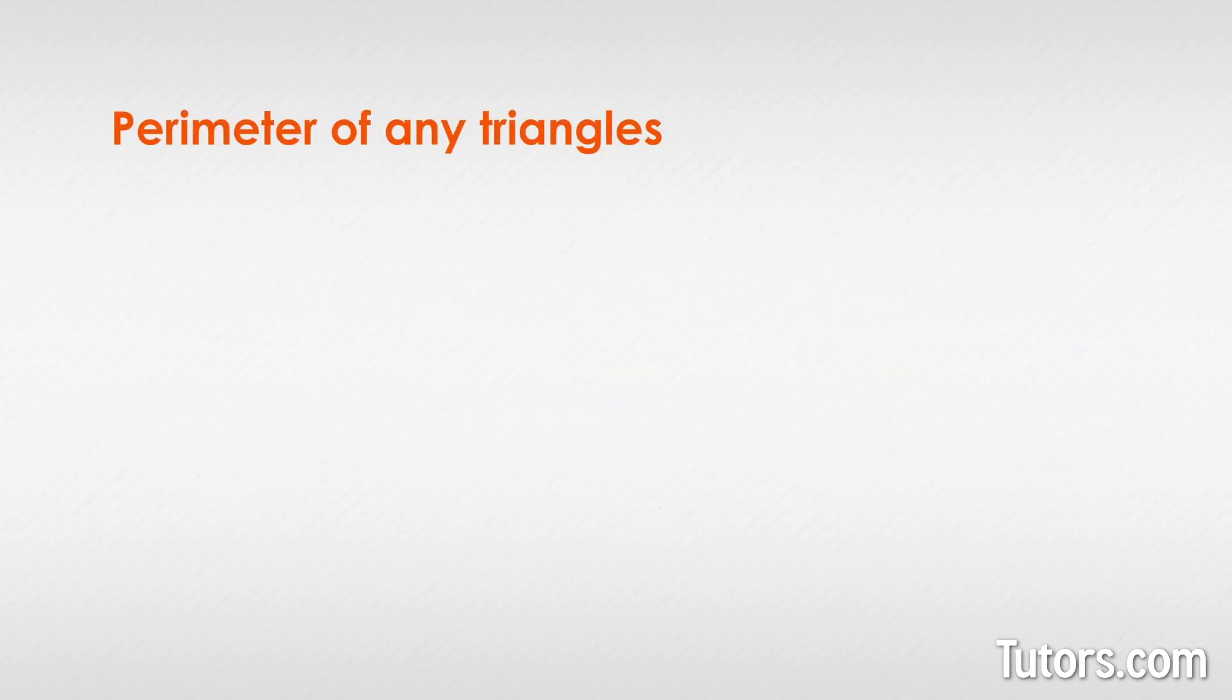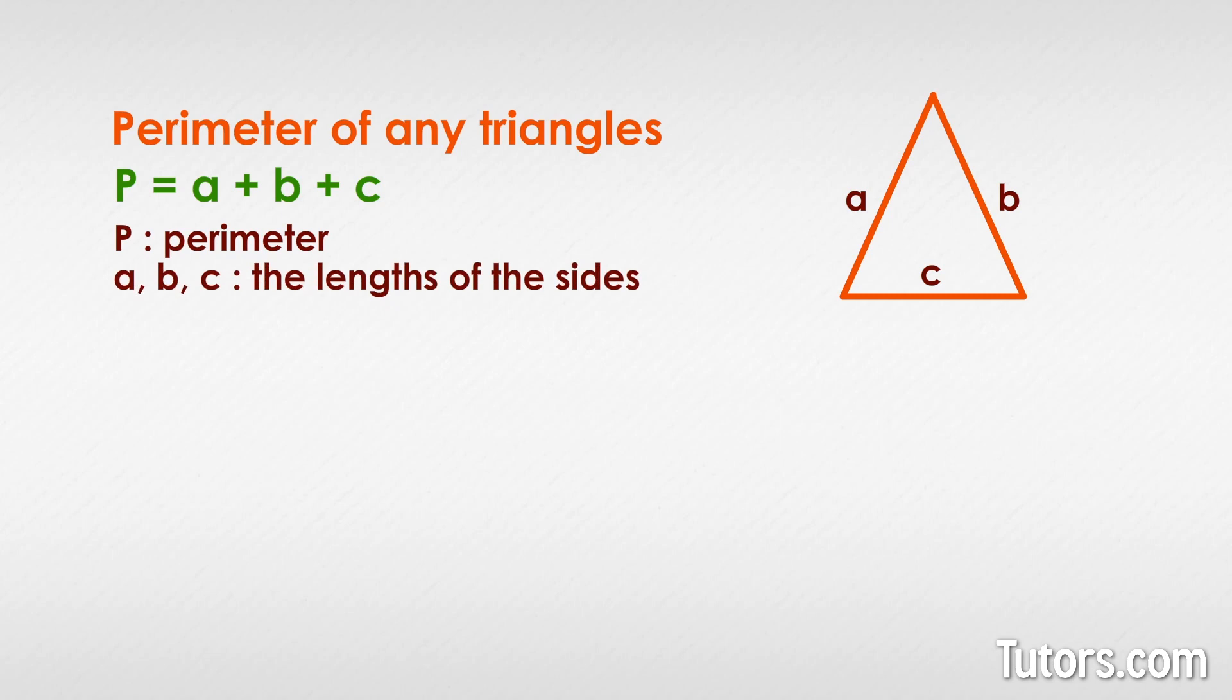You can find the perimeter of every one of these triangles using this formula. This is always true when P is the perimeter and A, B, and C are the lengths of the sides.